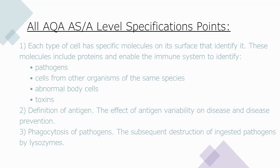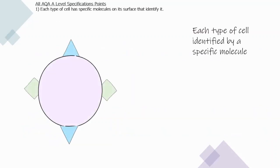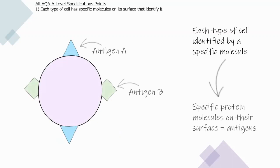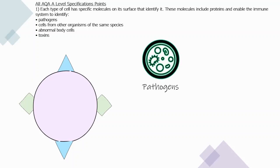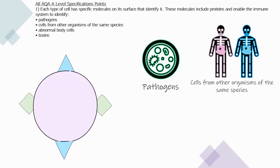You need to know about phagocytosis of pathogens and the subsequent destruction of ingested pathogens by lysozymes. Each type of cell is identified by a specific molecule, known as an antigen. An antigen is a specific protein molecule on the surface of a cell. When a pathogen invades, it has a specific antigen which is unique to it, so the immune system can identify it as an invading pathogen.